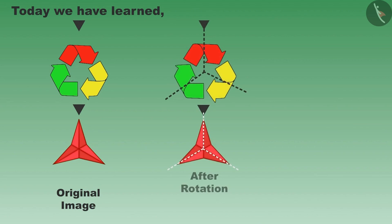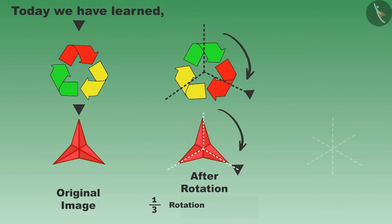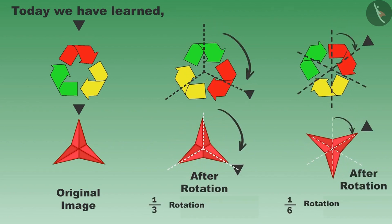Children, in this video, we learned that while rotating an image by one-third or one-sixth, you should focus on the color and the shape of different parts. It is not necessary that we will get the original shape after one-third or one-sixth rotation. Thank you.